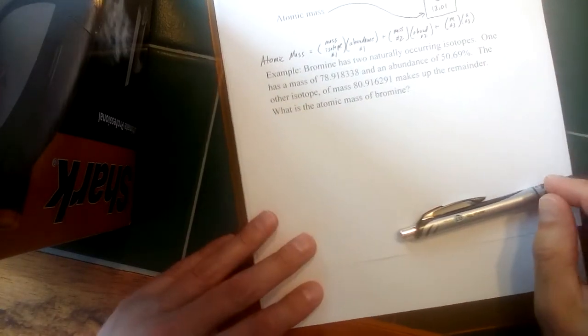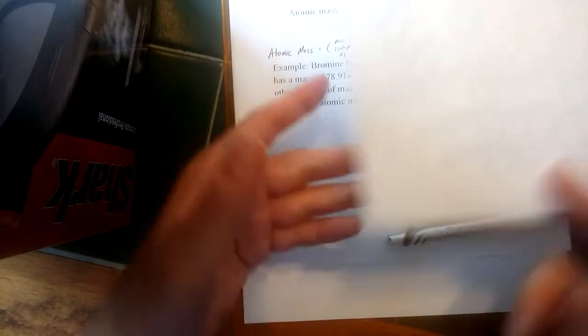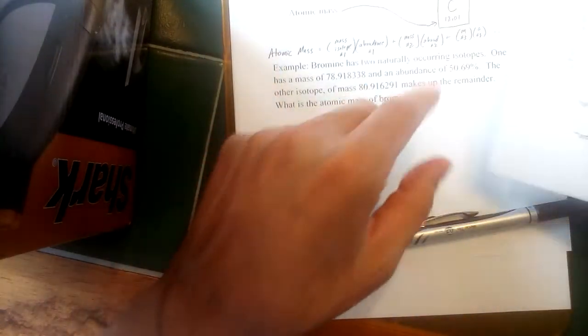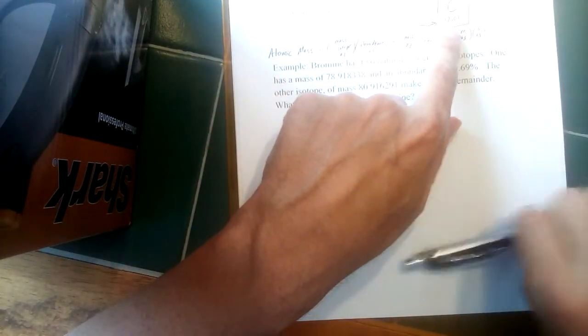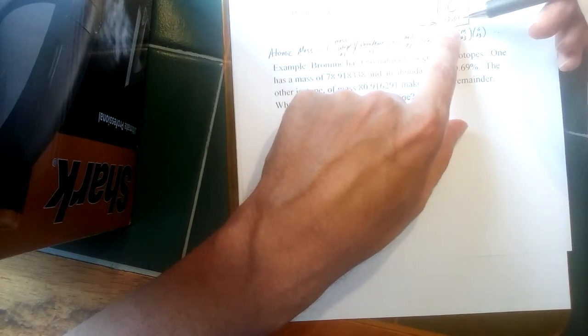Now we've been using carbon as an example, and carbon has—I guess I already wrote it here—the atomic mass of carbon is 12.01.